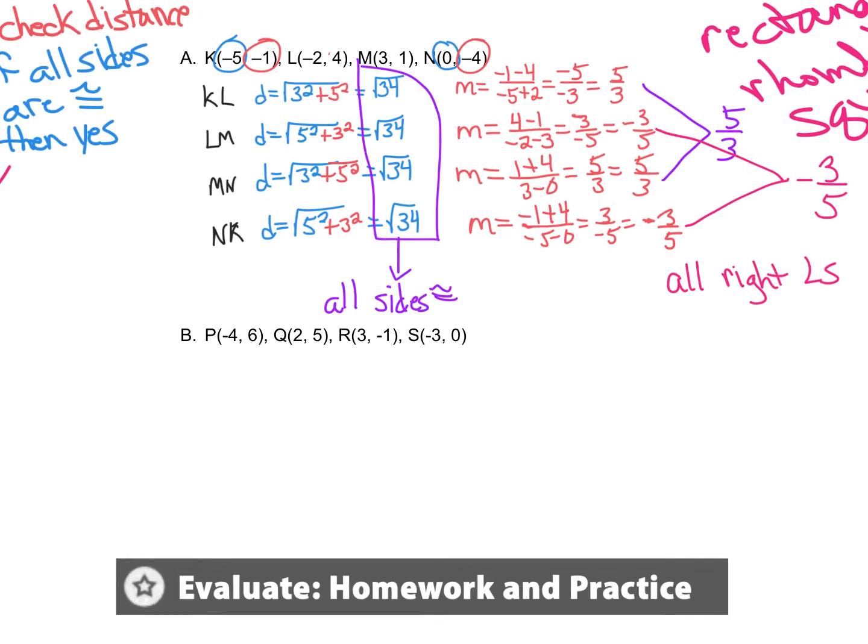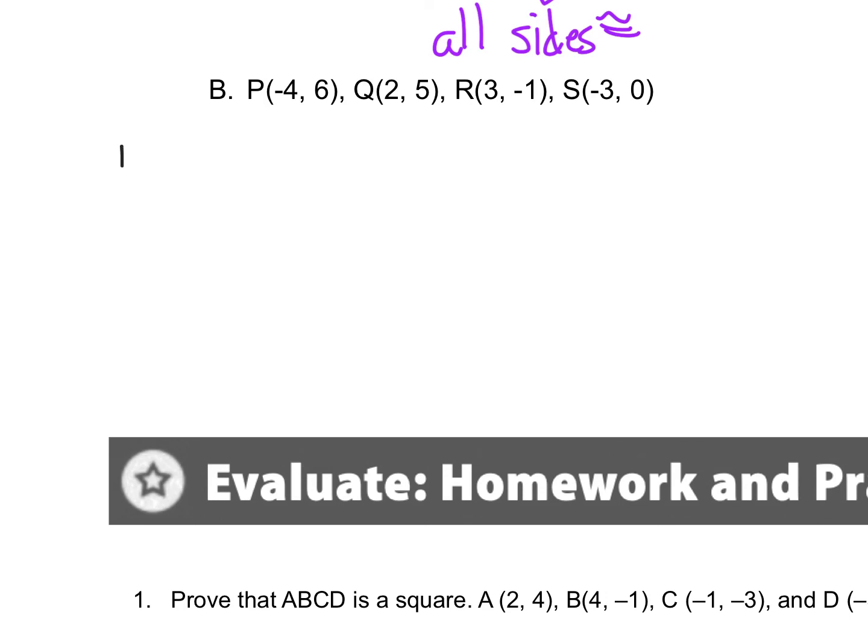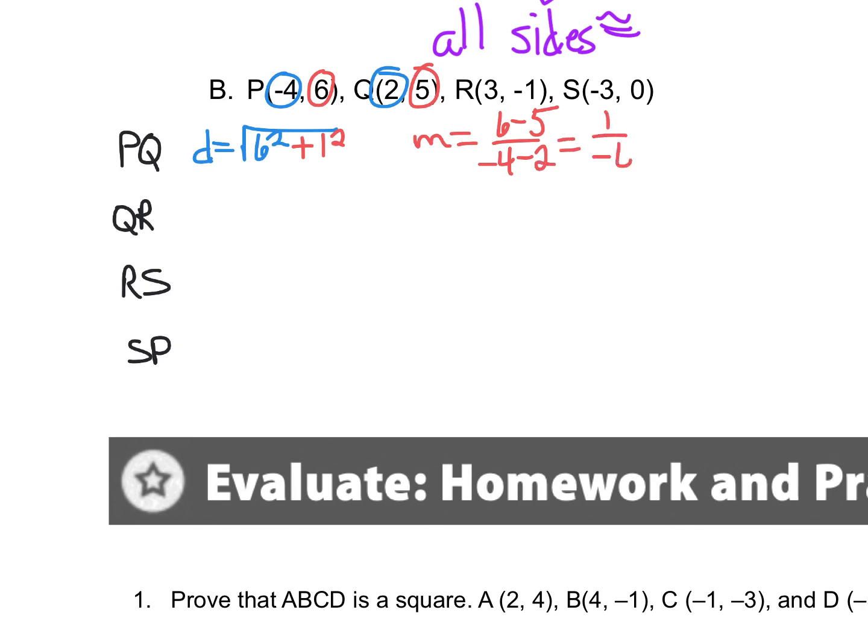All right, let's do the same thing. So I have PQ, I've got QR, I've got RS, and SP. If you guys want, you could actually stop this, do this problem, and then check back to see if you've got the right answer. So first we'll do distance. Distance between these X's is 6. Distance between these Y's is 1. And then my slope would be Y minus Y over X minus X, 1 over negative 6.